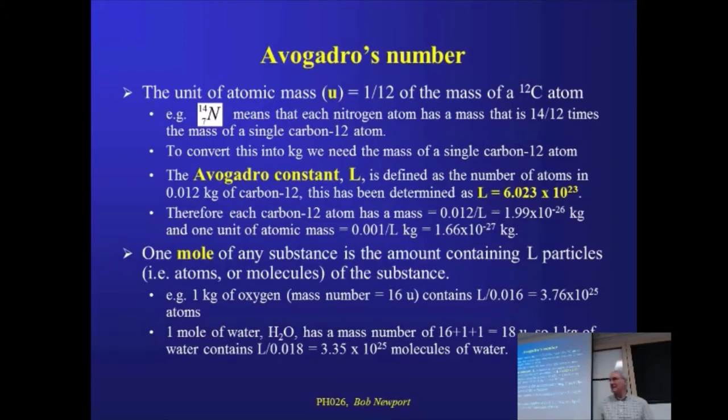But once people started discovering isotopes, then in fact there are isotopes of hydrogen that have a proton and a neutron, or a proton and two neutrons, so the mass number can actually be one, two, or three, that begins to fall over a little bit.